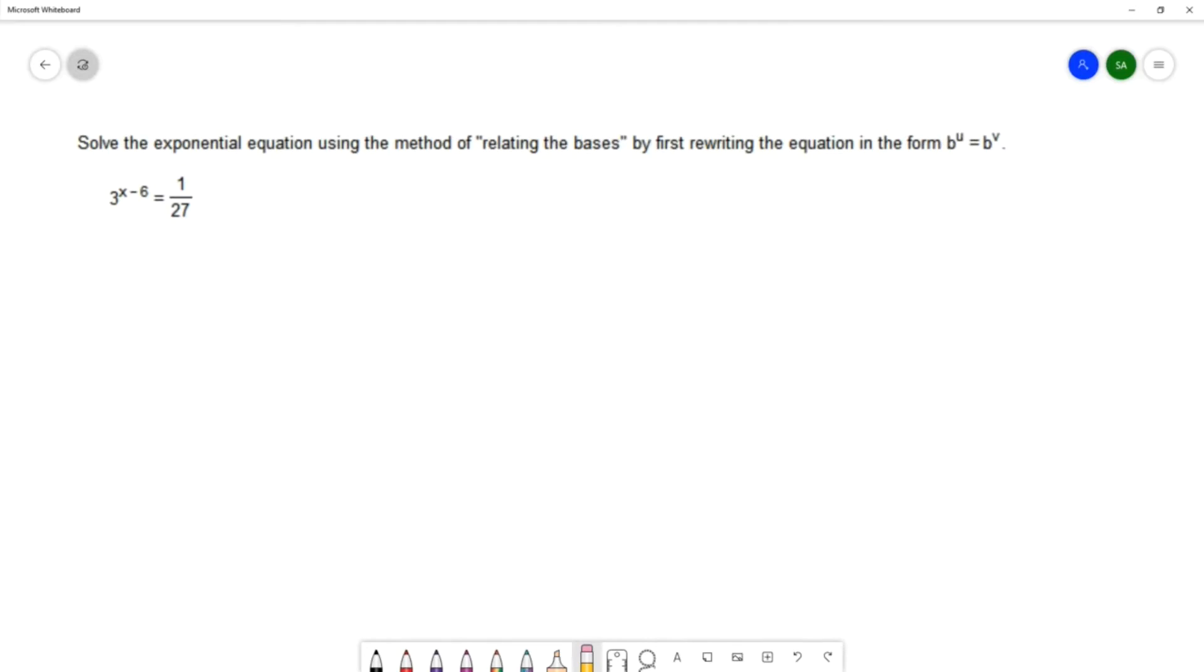The equation that we'd like to solve is 3 to the x minus 6 equals 1 over 27. So before we start solving this equation, let's discuss this method of relating the bases.